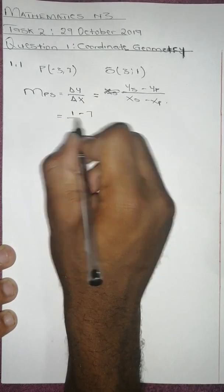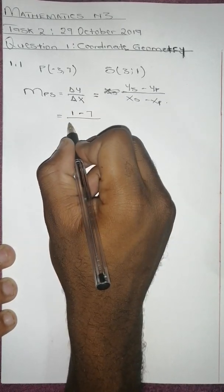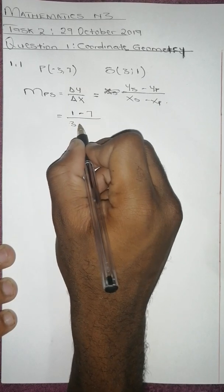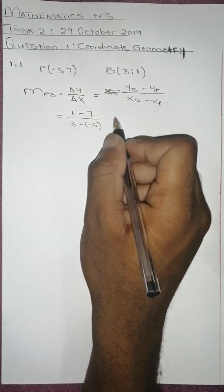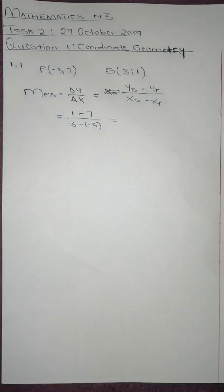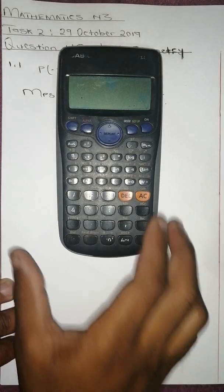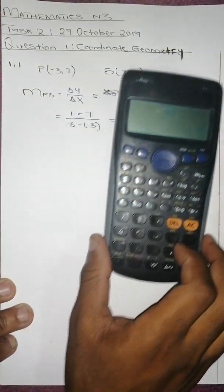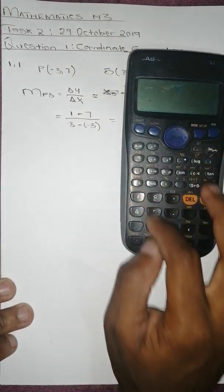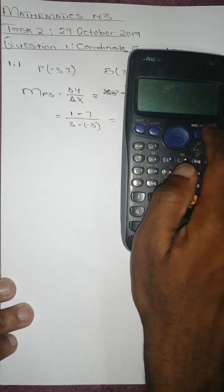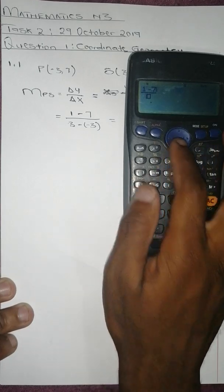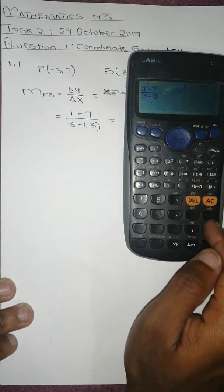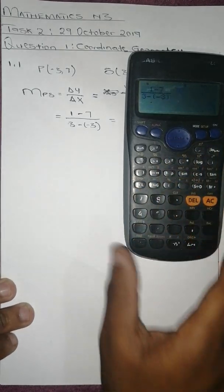Substituting the values, we get 1 minus 7 over 3 minus negative 3. Punching this into the calculator gives us negative 6 over 6, which equals negative 1. So the gradient of PS is negative 1.